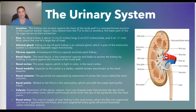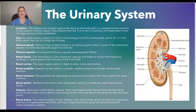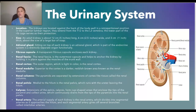You can see all of these structures in this diagram. The renal cortex is the outer region, which is light in color. Superior to the cortex is a darker reddish-brown area known as the renal medulla. Renal pyramids are separated by extensions of cortex-like tissue called renal columns. The renal pelvis is medial to the hilum and runs with the ureter leaving the hilum.